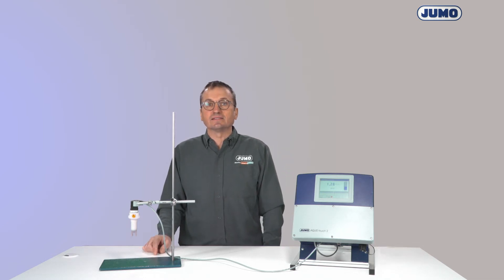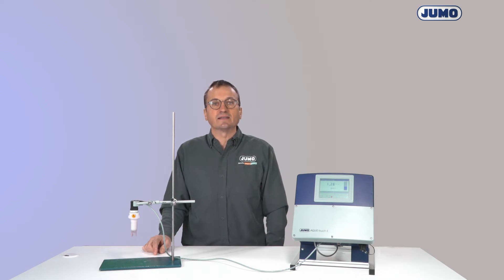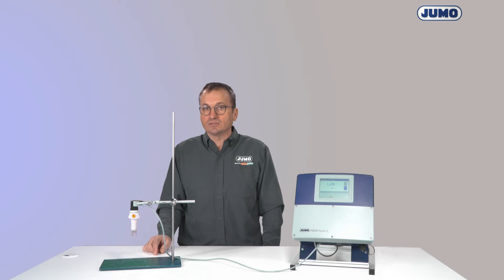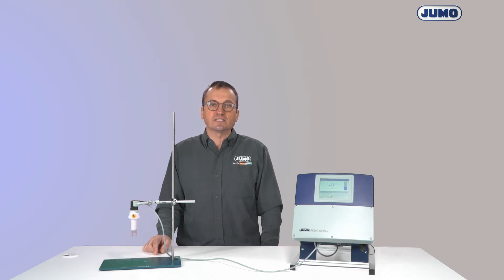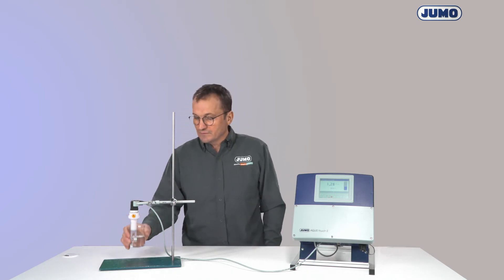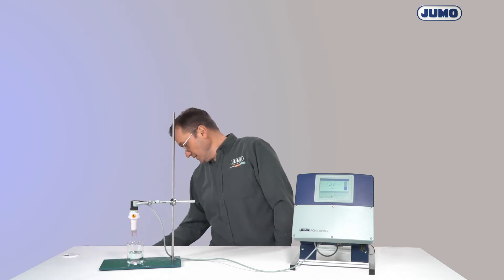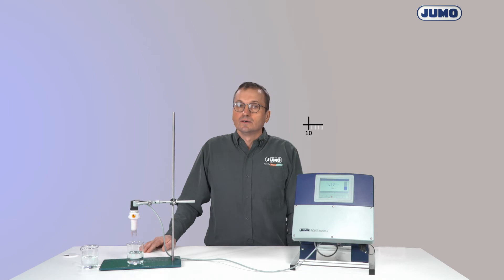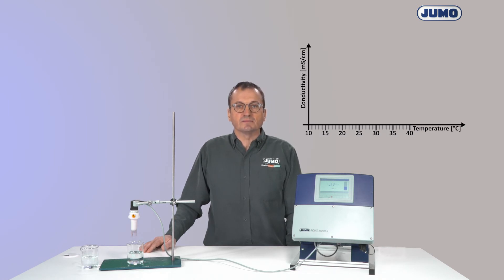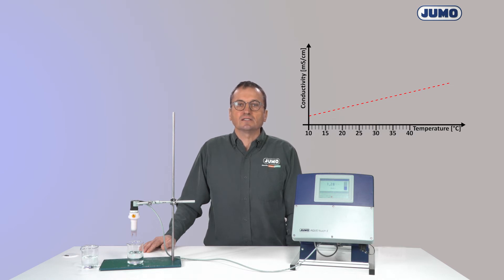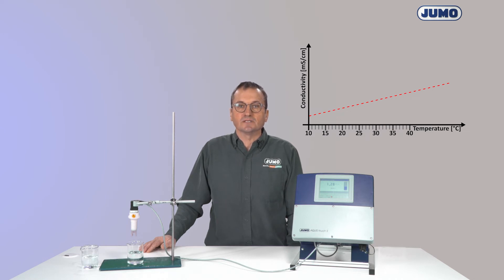I now have to determine the temperature behavior of the process solution, so that the transmitter can later calculate the conductivity back to 25 centigrades. For this I need the process solution with a temperature of about 25 centigrades and tempered to the typical process temperature. For conductivities from approximately 10 µS per centimeter, the temperature behavior of the conductivity can be regarded as linear in practice. The conductivity of the process solution increases linearly with temperature. This actual conductivity is the uncompensated conductivity. If the transmitter has knowledge of the slope of the temperature behavior, it can calculate the conductivity back to 25 centigrades at all temperatures.